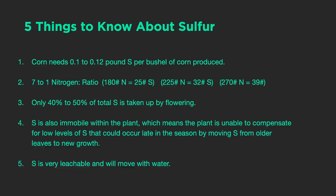That's the complete opposite of nitrogen, which is almost fully taken up by flowering. Sulfur is just getting started at that point. Additionally, sulfur is very immobile within the plant, which means the plant is unable to compensate for low sulfur levels that occur late in the season by moving sulfur from older leaves to new growth — it just won't happen.